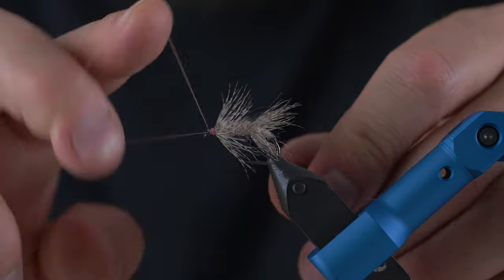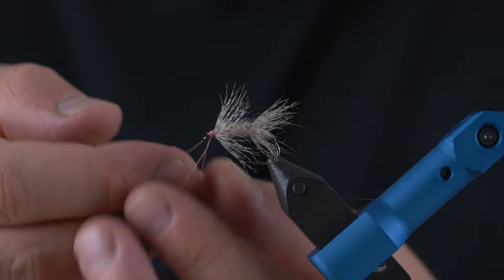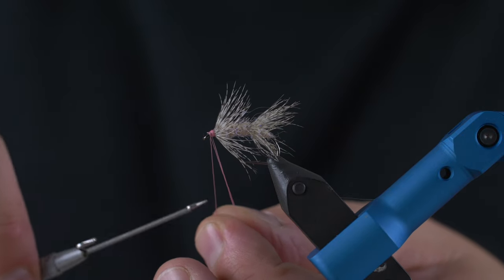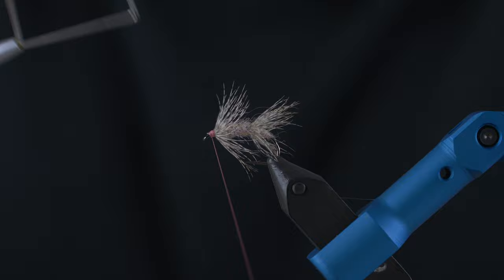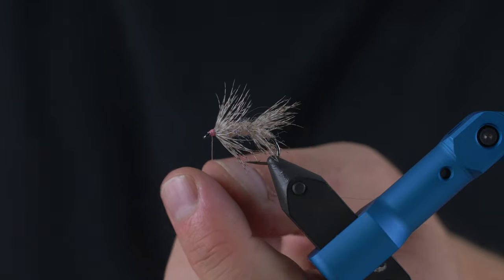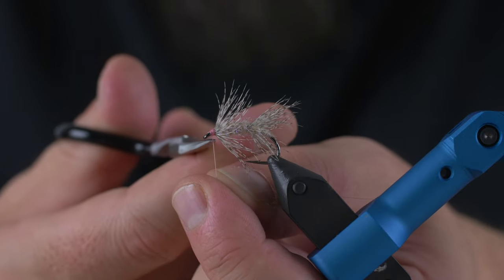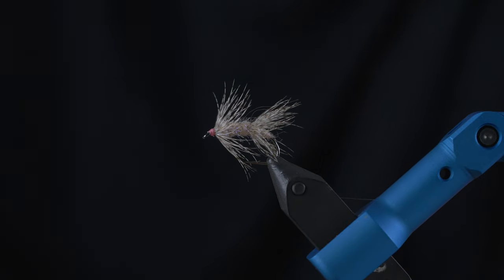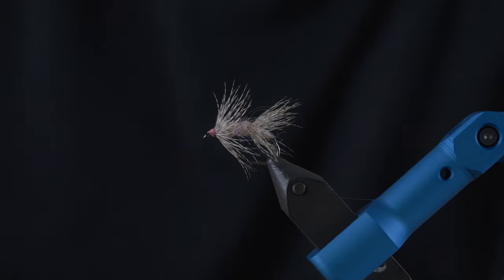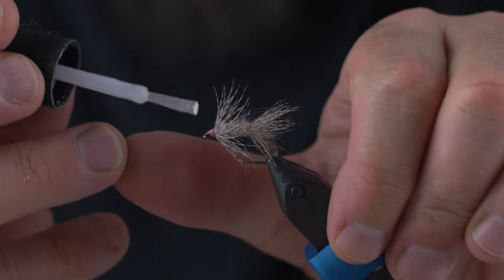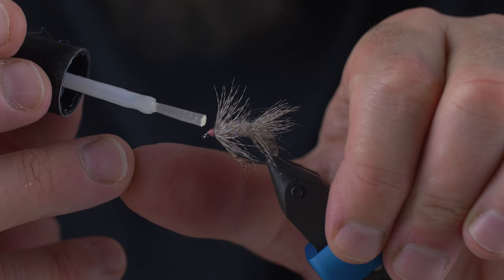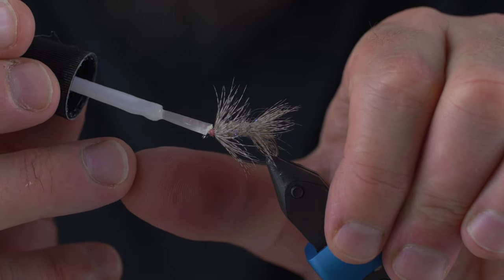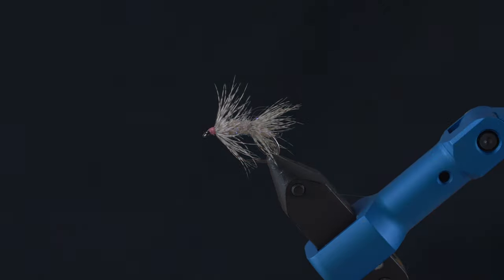And there we have it. Just going to do a quick whip finish. Cut away the tying thread and then apply some varnish or some Saba Gab. In this case I'm going to use Saba Gab which is basically the thing I always use. It's strong and it just makes your fly last a long time. There we go.